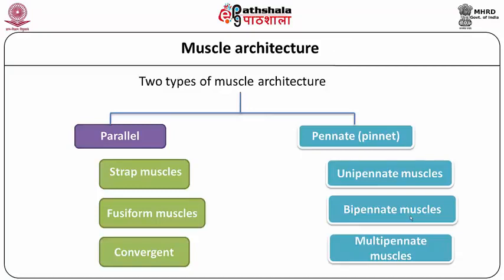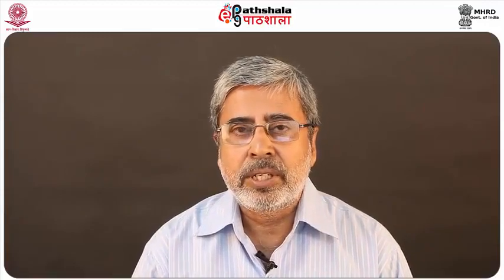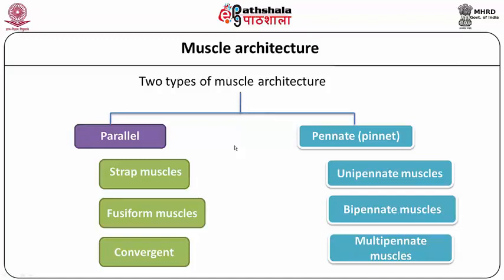So far we have learned about the muscle and muscle attachment with the bone. Now let us look at the nature of arrangement of the muscle fibers along with the tendons — this is known as muscle architecture. It describes how the muscle fibers are arranged around the tendons or how they create an axis with the bone. This axis is important because the line of pull will be determined by this axis. Therefore, the architectural arrangement of the muscle fibers is very important, since it determines the line of pull and actually makes the motion.